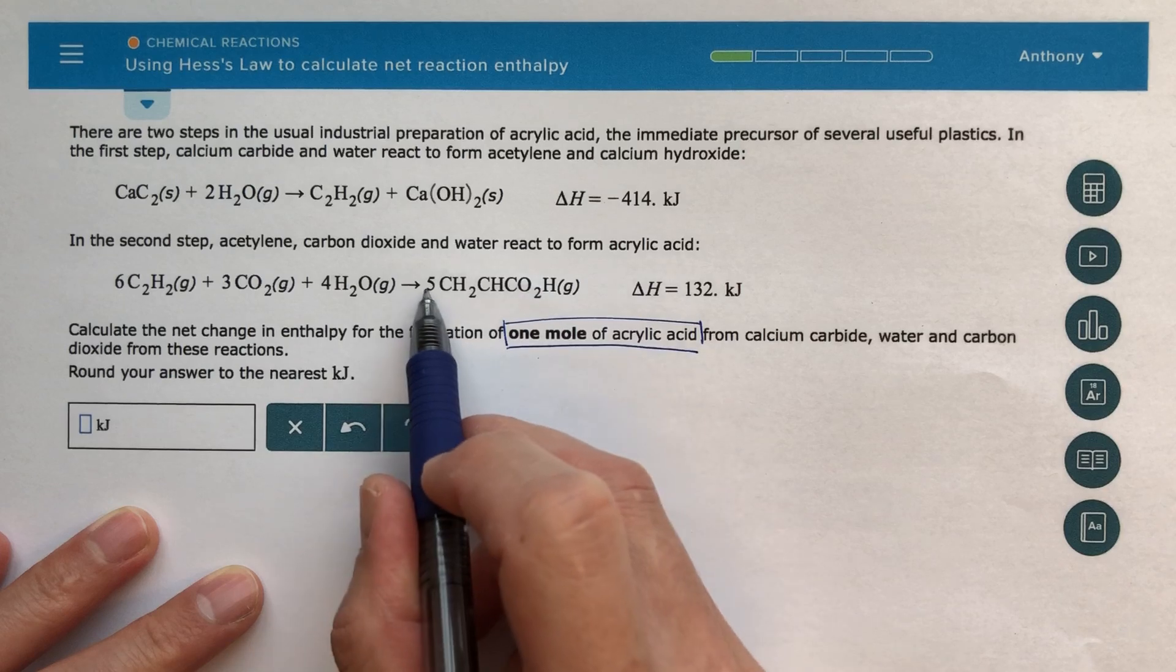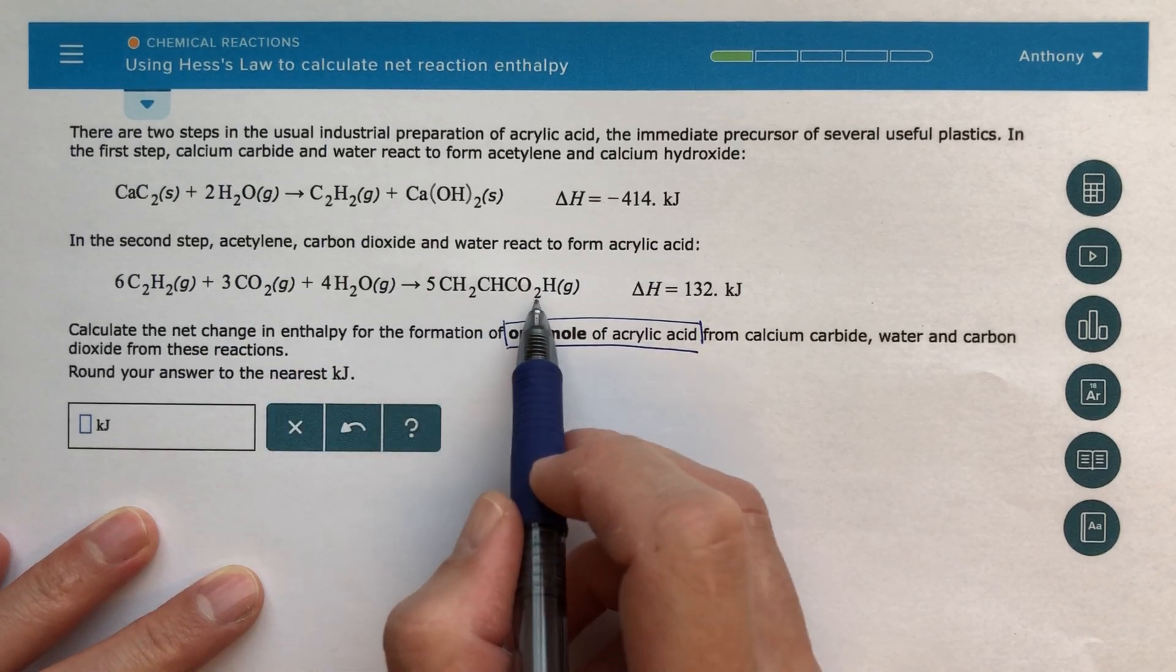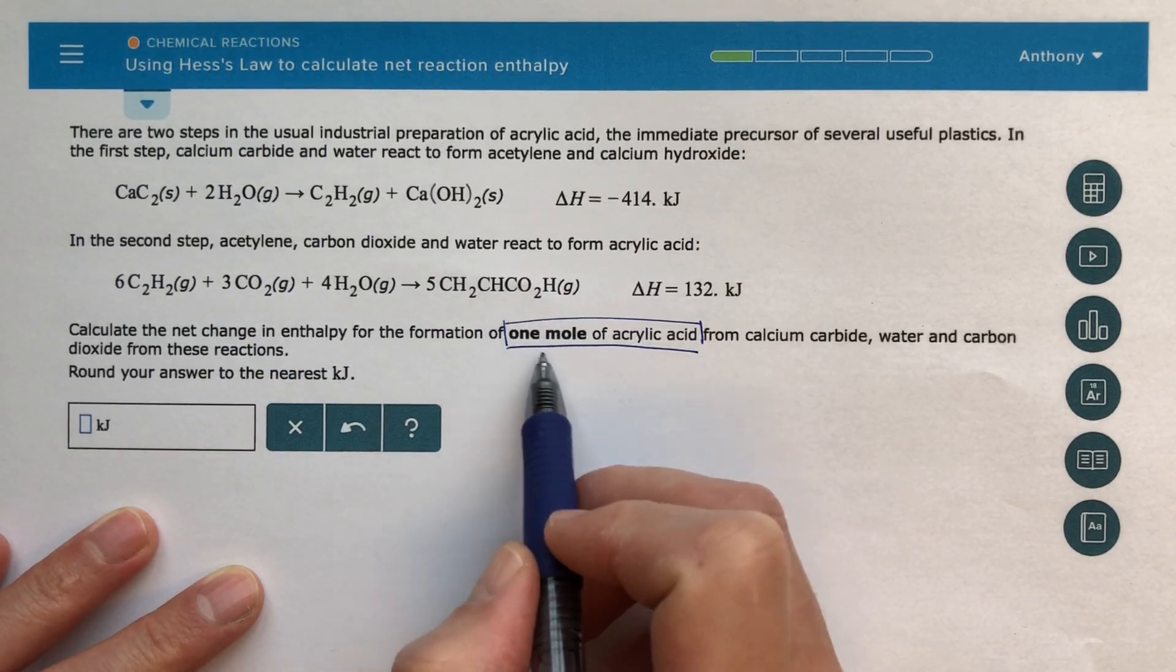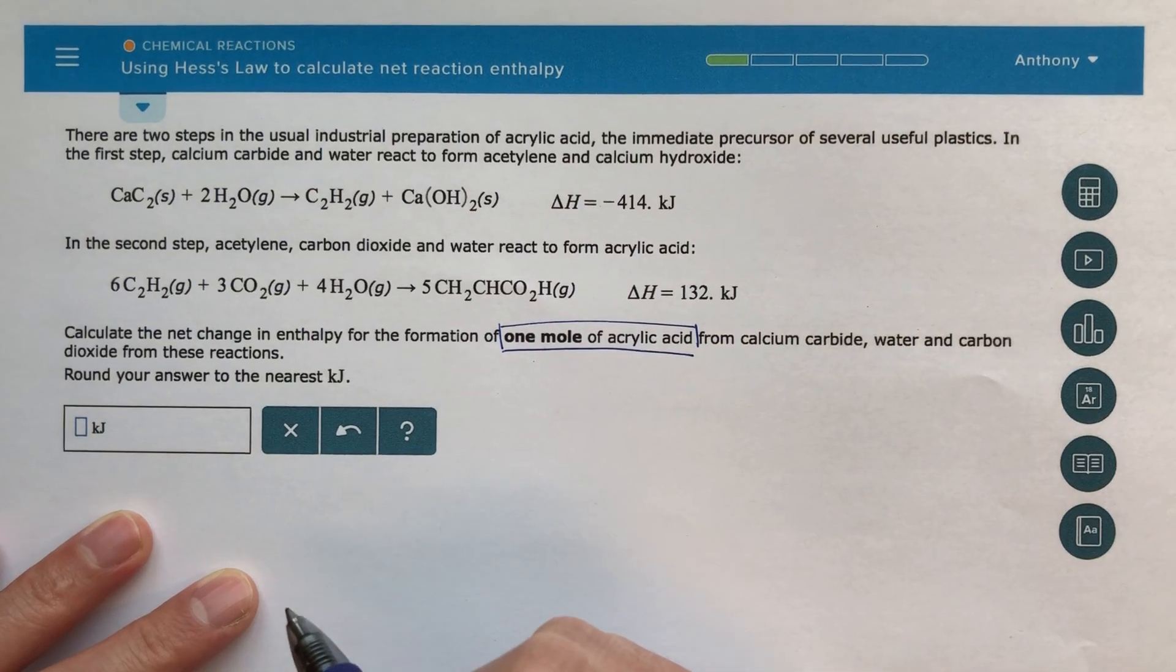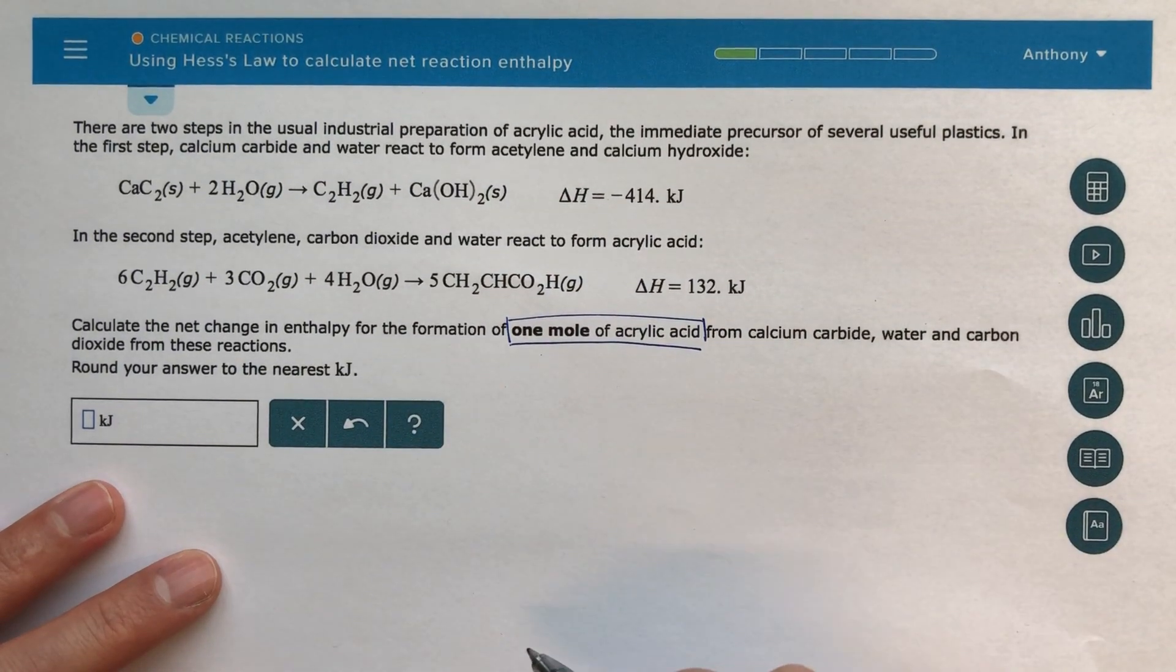So in this step two, we're going to form, in this reaction here, five moles of acrylic acid. But I only wanted to know the information for one mole of acrylic acid. So we're going to have to keep that in mind as we go through this problem.